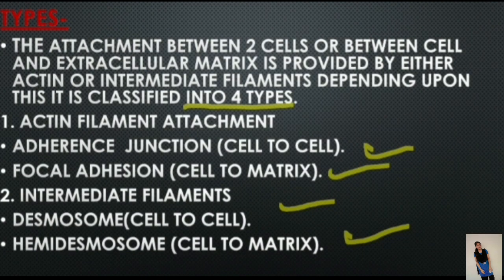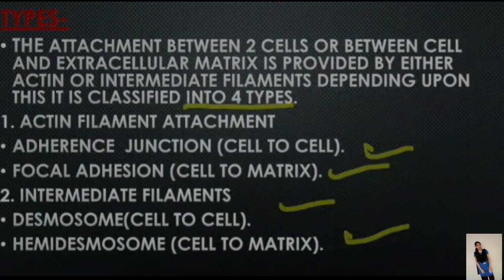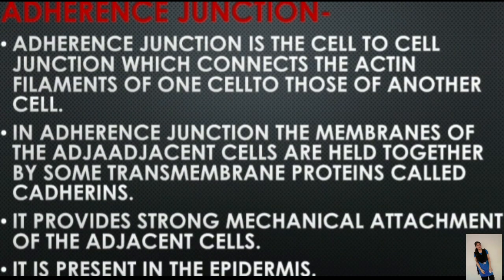Depending on the actin filament attachment, anchoring junctions are divided into two types: adherence junction and focal adherence. Depending on intermediate filament attachment, they are divided into two types: desmosome and hemidesmosome.